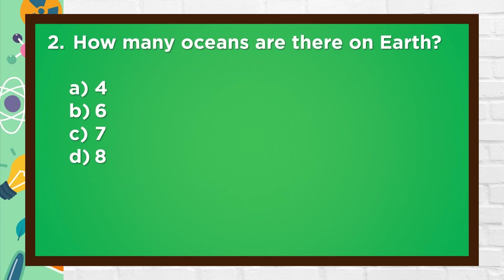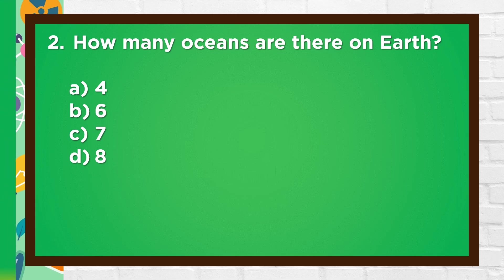Number 2. How many oceans are there on Earth? A. 4, B. 6, C. 7, D. 8. The answer is A. 4.